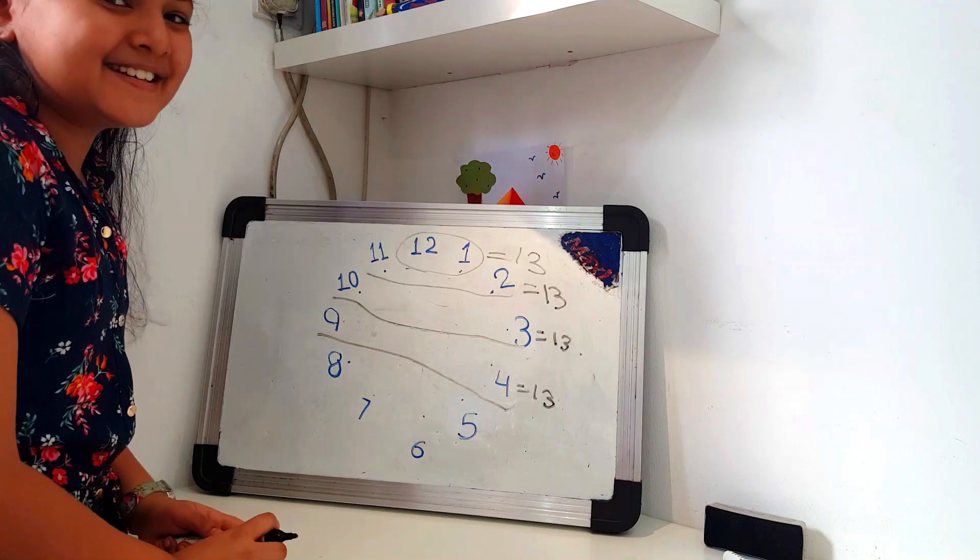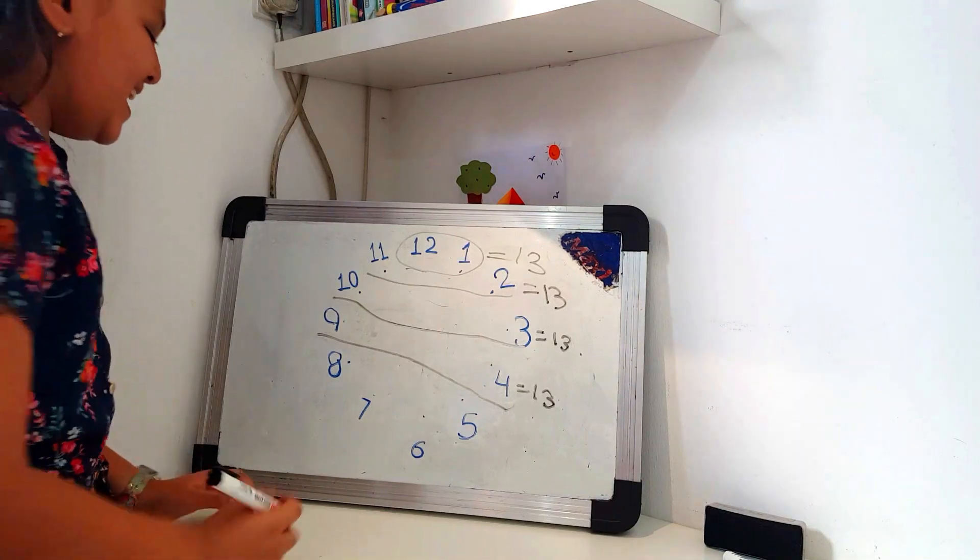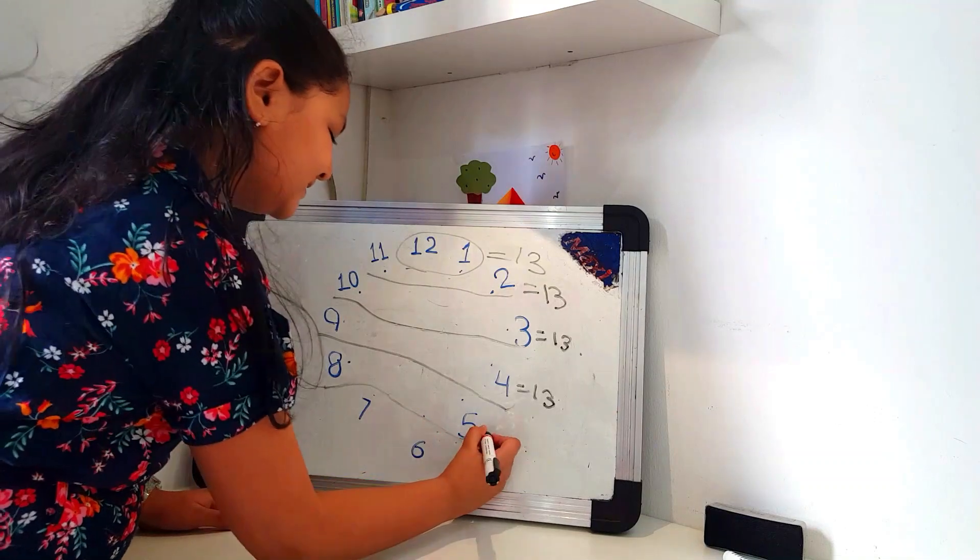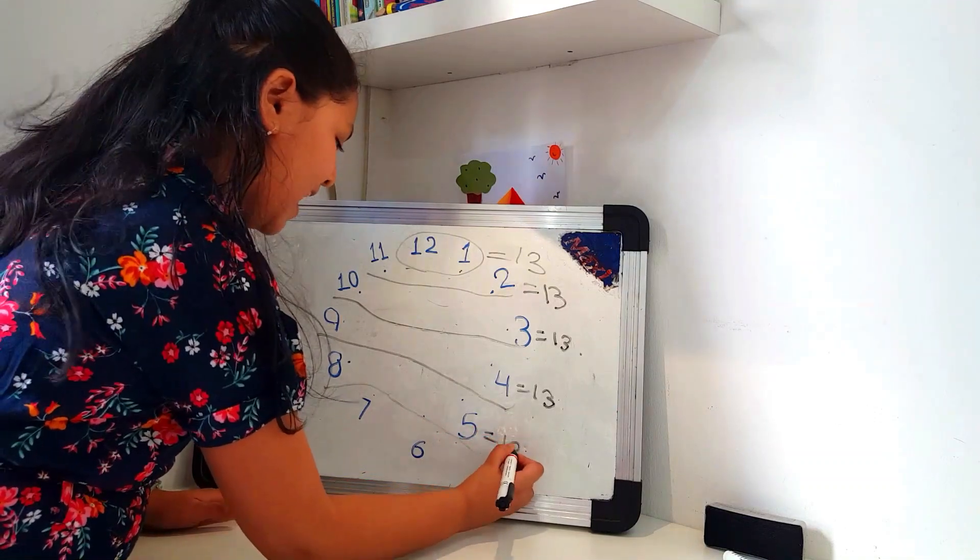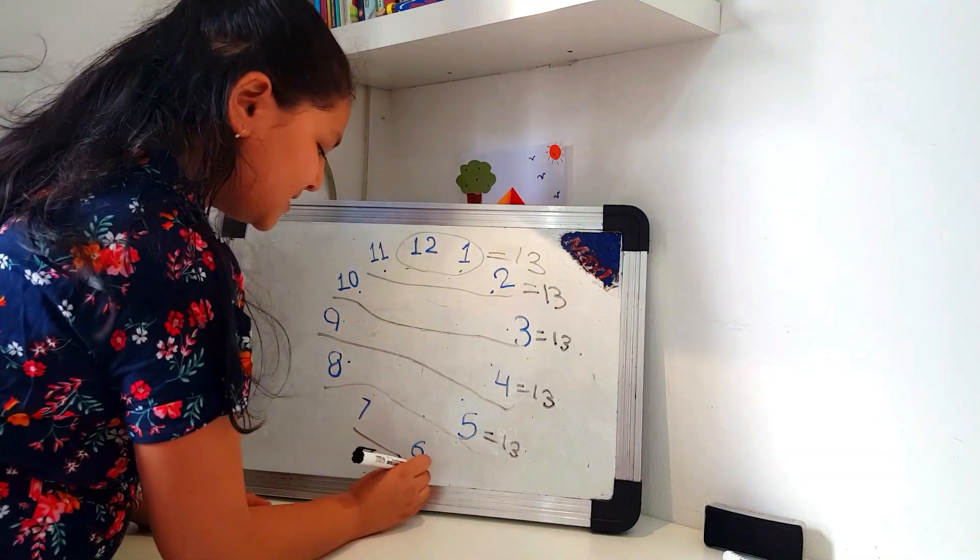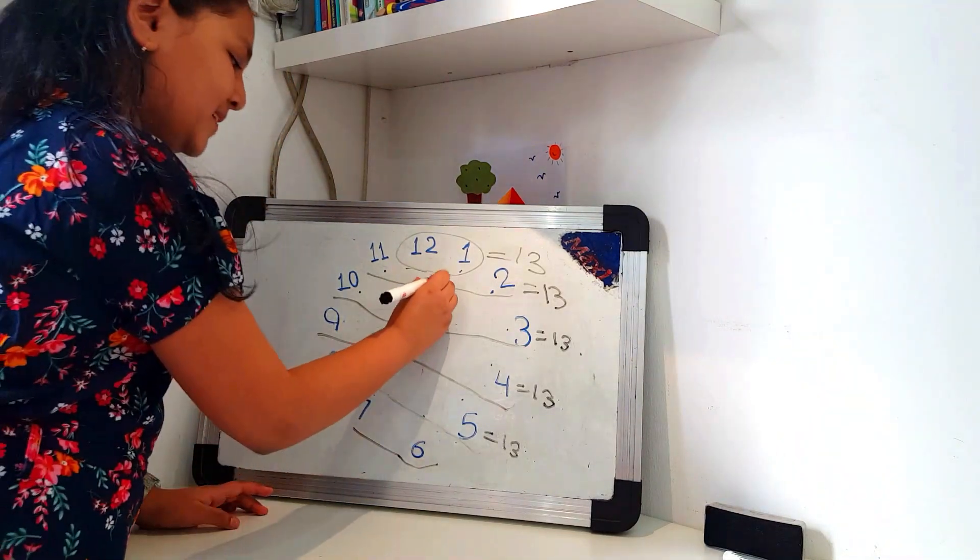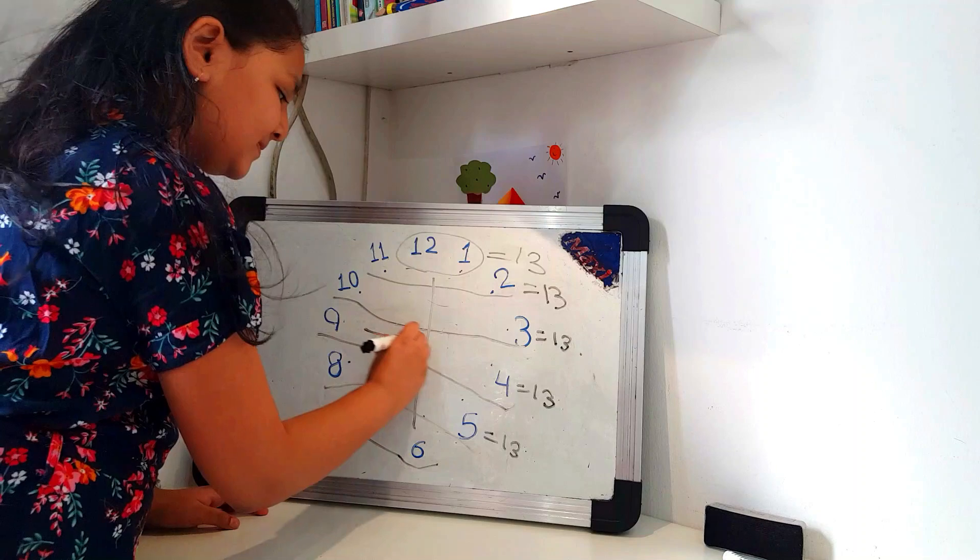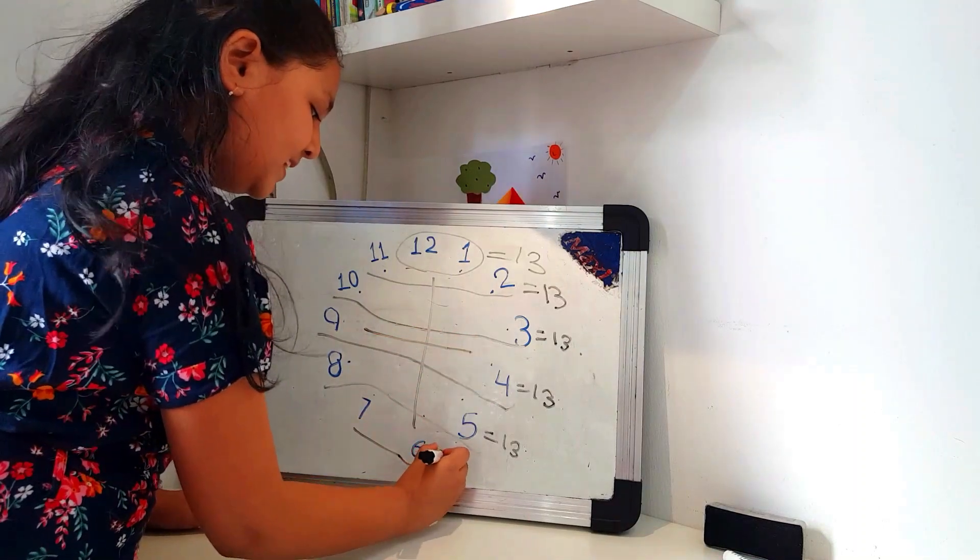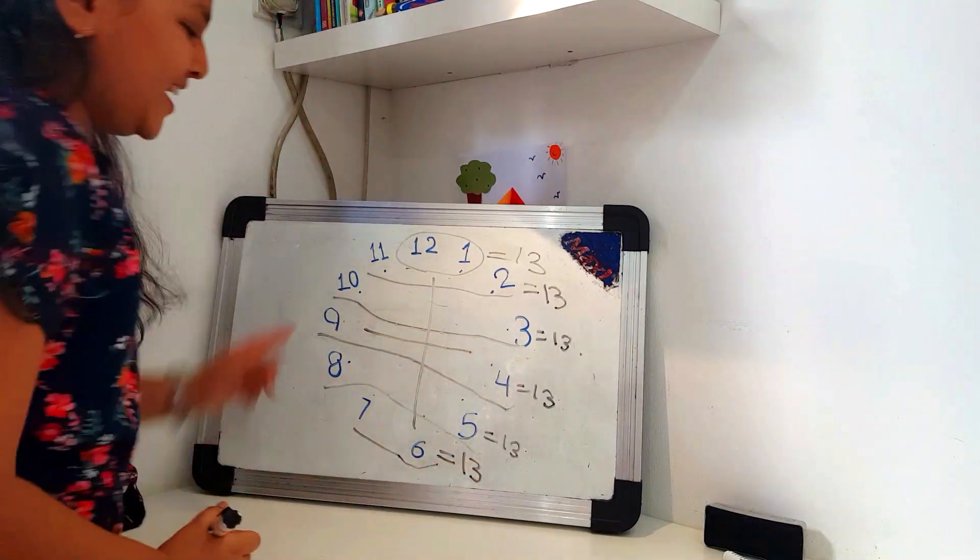And what is 8 plus 5? Friends, guess. 13. Yes. It is 13. And okay. So this time, it's 7 plus 6. What is 7 plus 6? 13. Yes. It's 13.